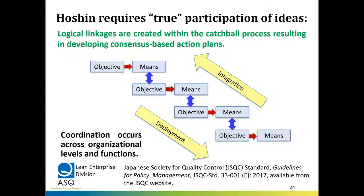Hoshin requires true participation of ideas and logical linkages within a catchball process. We have objectives with means that get cascaded to the next lower level — that's the deployment process. Those lower objectives also have means, which cascade further down, and then we go back upwards. There's integration so that linkages exist top to bottom and bottom to top. At Xerox, we called this establishing line of sight — from the top you can see how objectives cascaded into the daily management system, and from the daily management system you could look up and see your contribution to the organization's strategy.